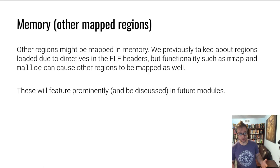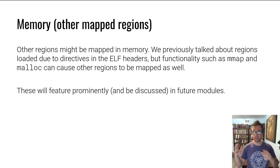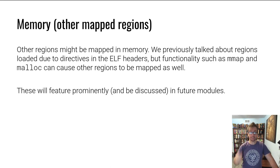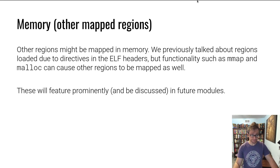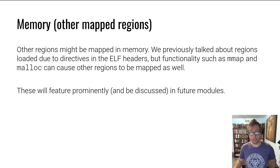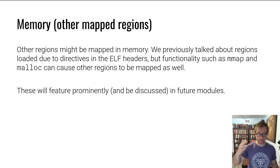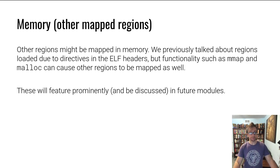AMD64 is not segmented — there are no special separate memory regions. Memory is used for things other than the stack: dynamically allocated memory will be covered in a future module, but it will feature very prominently. Memory can be mapped and unmapped at will during normal program operation. Files can also be mapped into memory, which I'll discuss in the Linux process life cycle lecture in this fundamentals series.